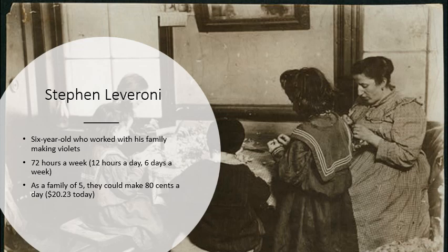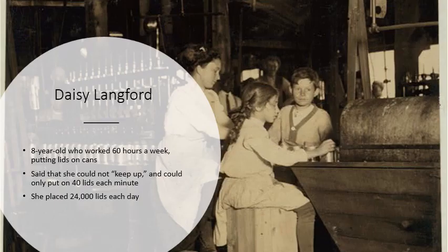That's about $20.23 today for a family of five, including a six-year-old. You see people stuck to their wages — they can barely make enough money to live. This is a big issue of this day: the use of child labor.